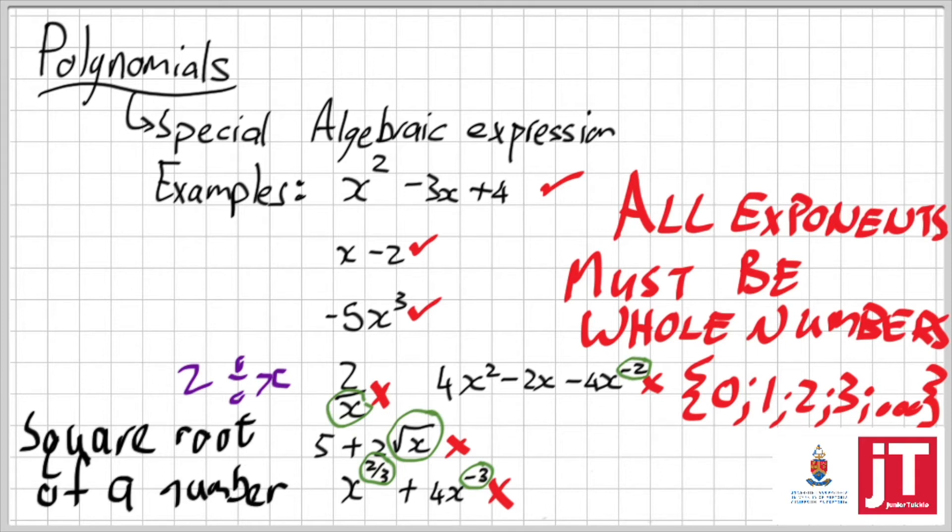So whenever your exponent is like a 1, or a 1, or a 2, then, or a 3 like there, then it is a polynomial. But the moment that it isn't, it is not a polynomial.